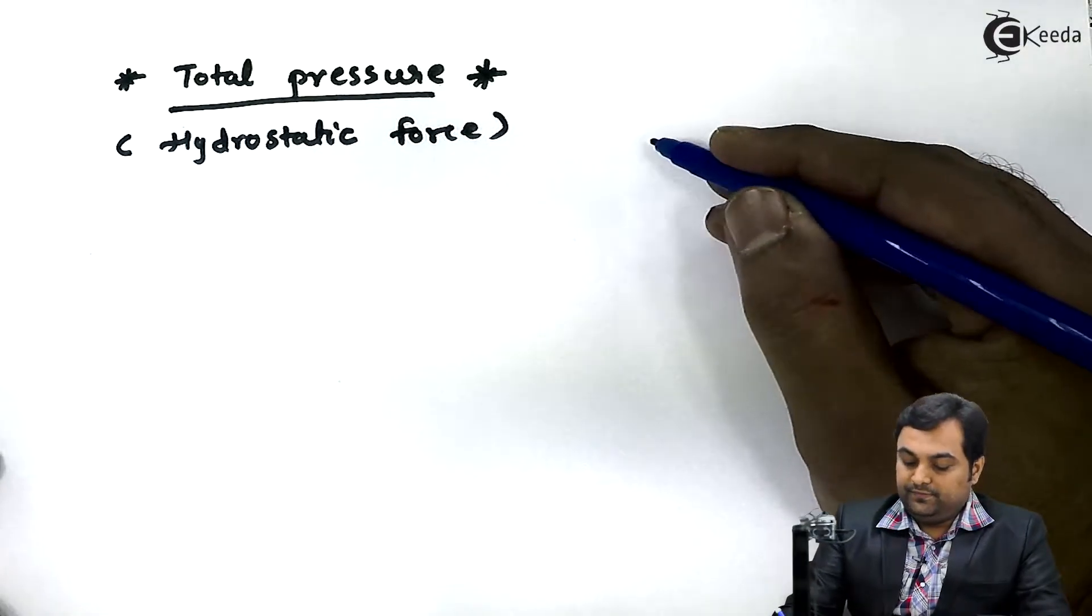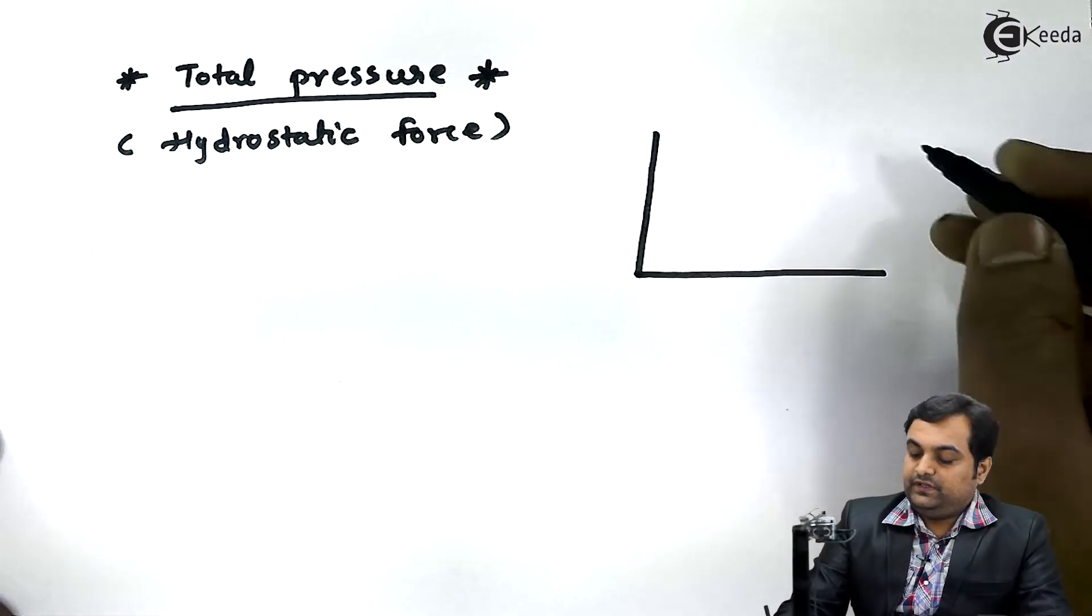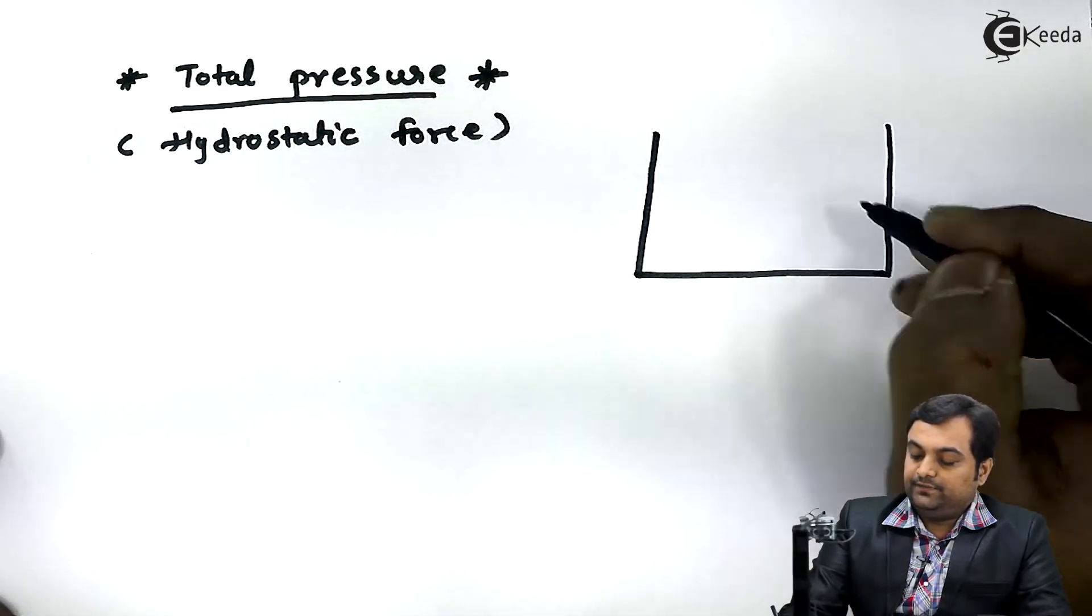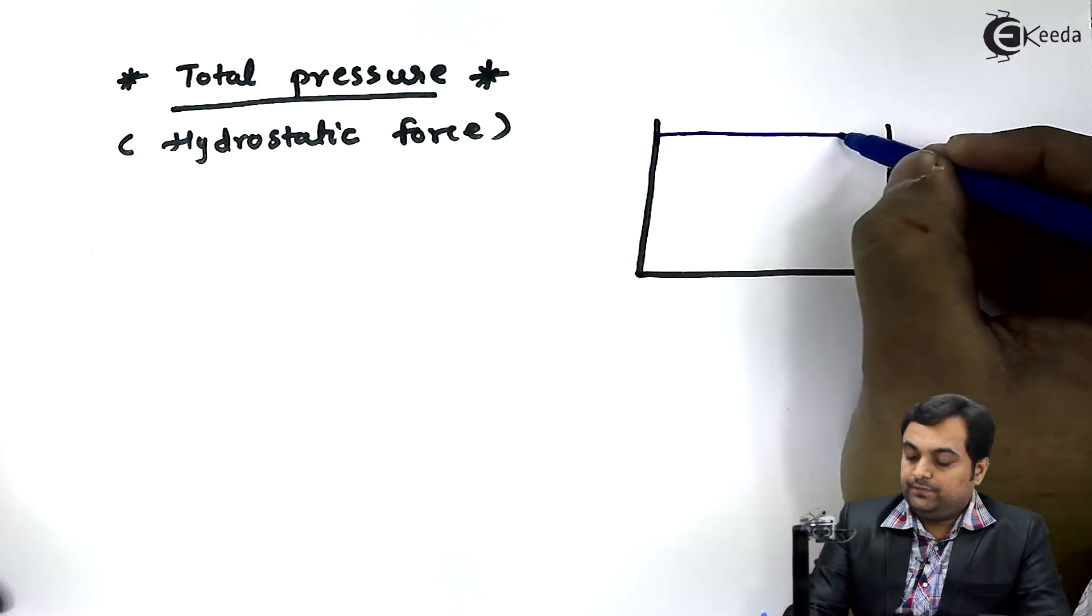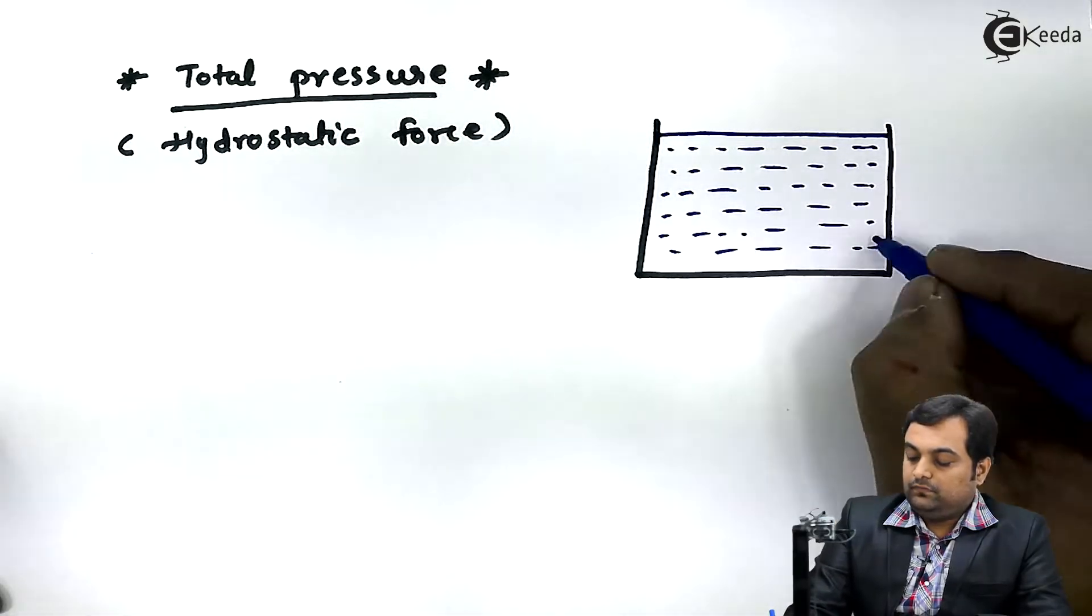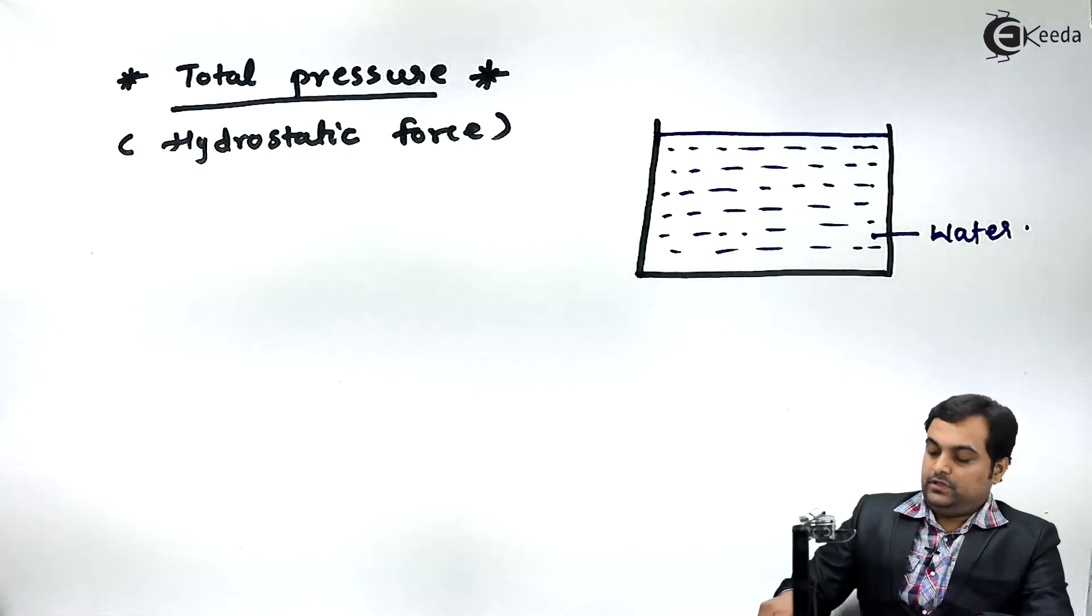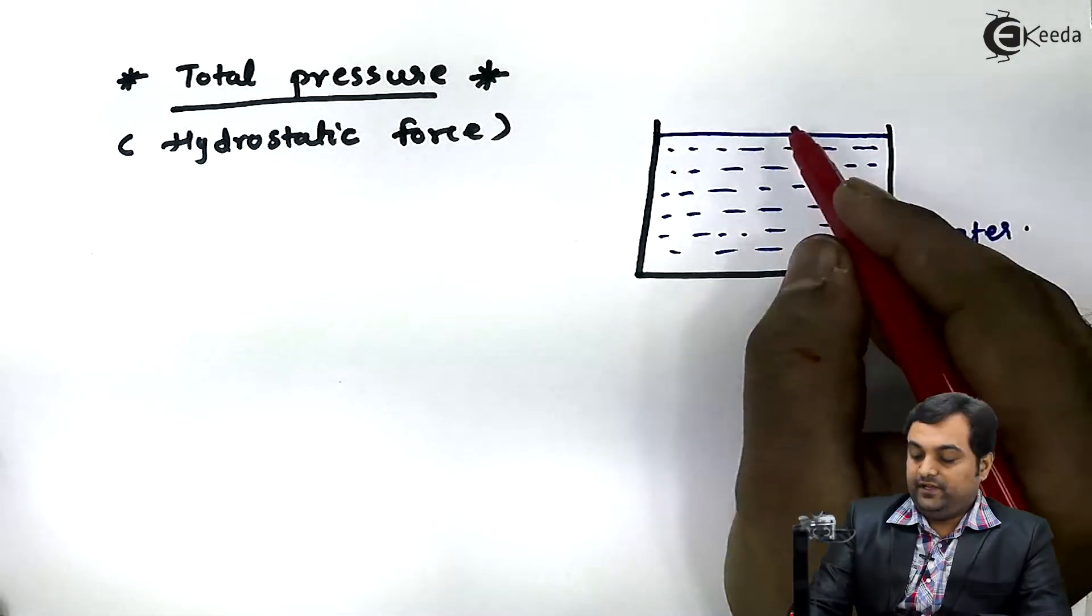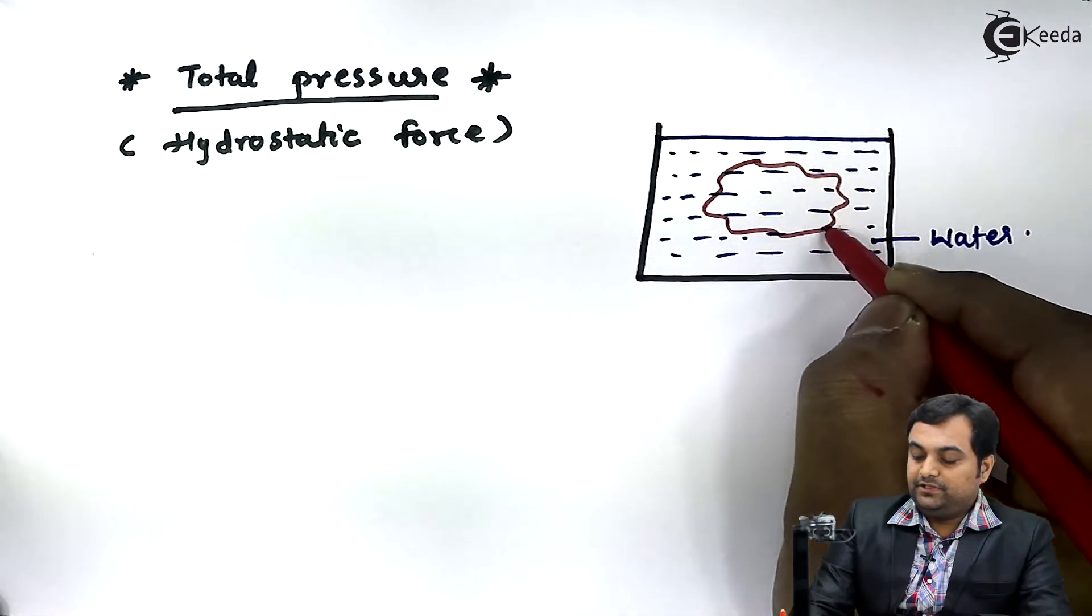Now for total pressure, the assumption is that we have a tank which is filled with water. Water is there inside the tank and next we have a body of any given shape. The shape is arbitrary.